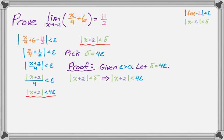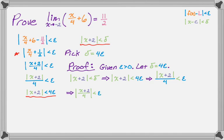Dividing both sides by 4, we're now reversing the steps we did in the scrap work to find the relationship. Pulling everything into one absolute value — because I ultimately want it to look like the second step in our scrap work — by bringing the 4 inside I get the absolute value of x plus 2 over 4, which I can rewrite to look exactly like that second step.